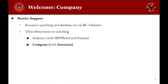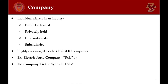Next, we'll look at company and the individual players in an industry. These could be publicly traded on the exchange, privately held by families or other individuals, or they could be international or subsidiaries. We highly encourage you to pick a public company because they have much more information available. For the purposes here, we'll look at the company Tesla.